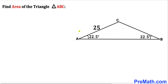Welcome to pre-math. In this video we have got this triangle ABC such that angle A and angle B are congruent angles. Moreover, this side length AC is 25 units, and now we are going to find the area of this triangle ABC.